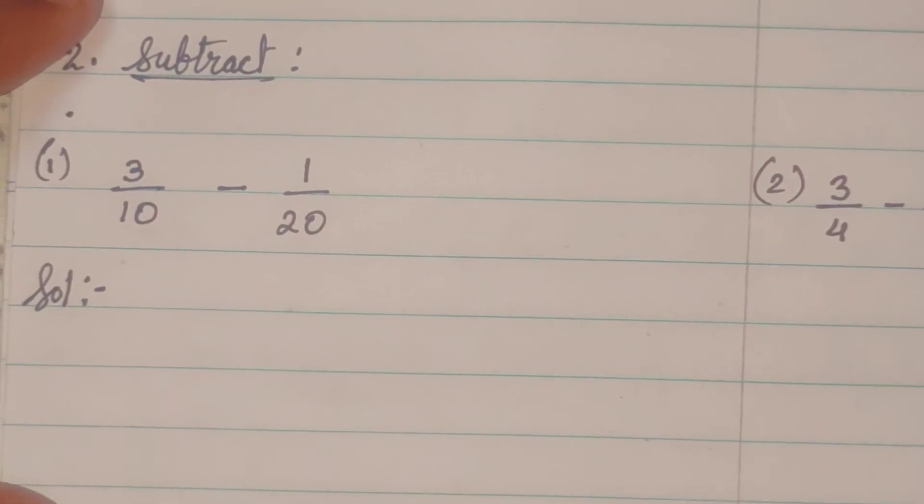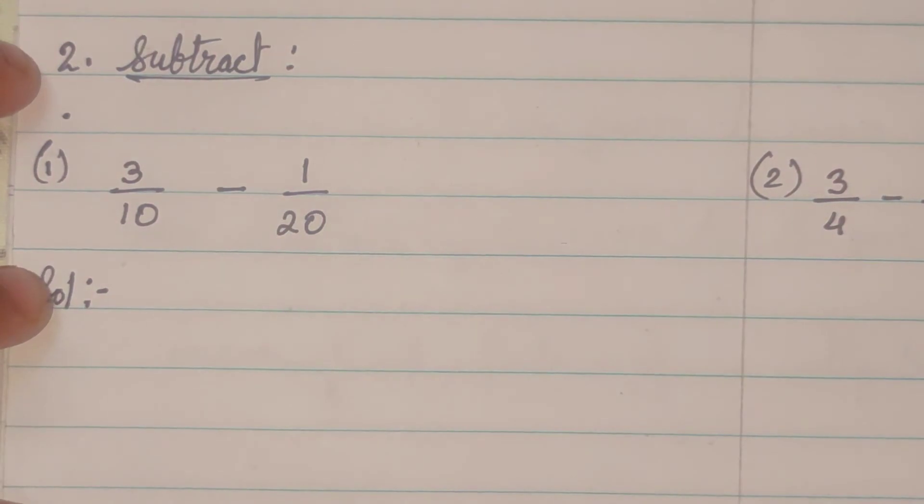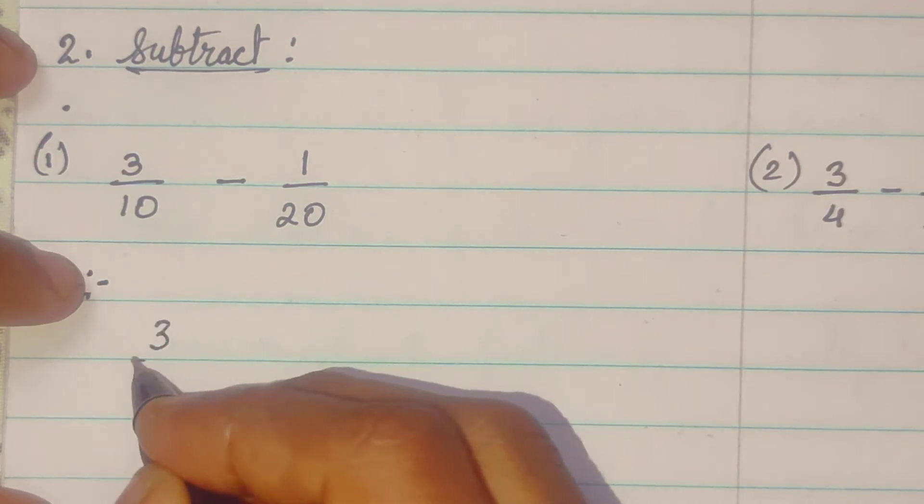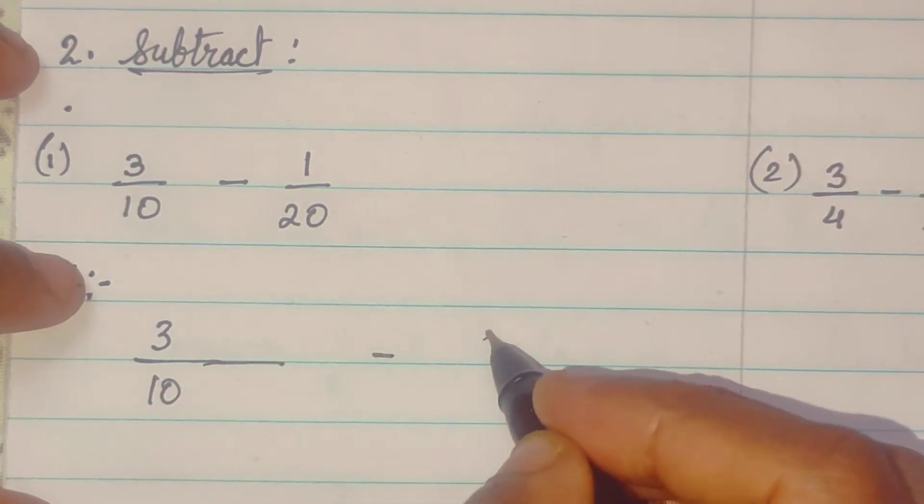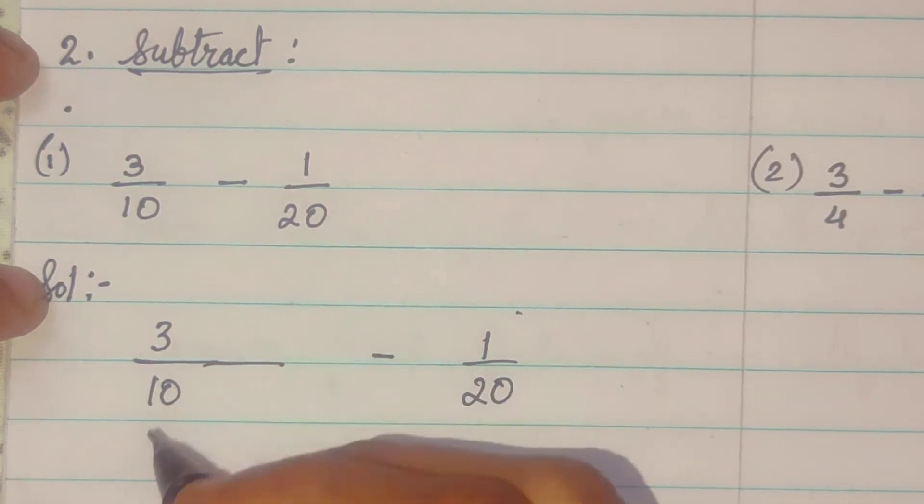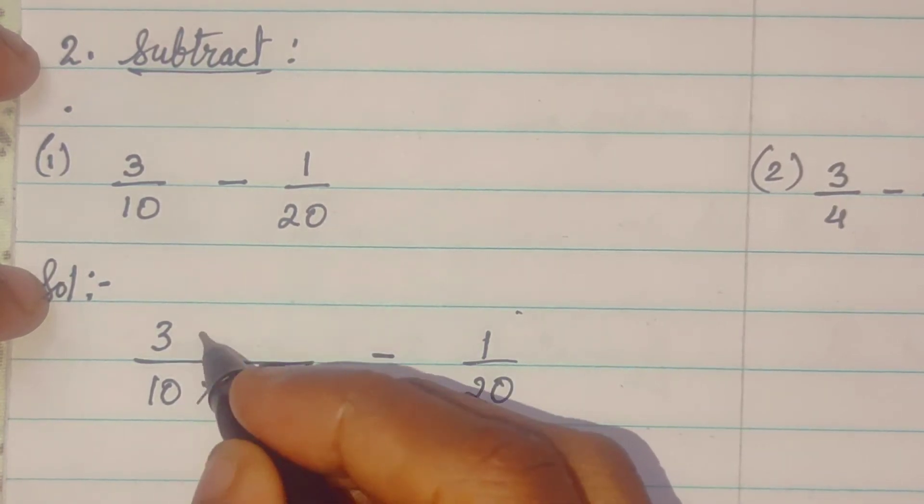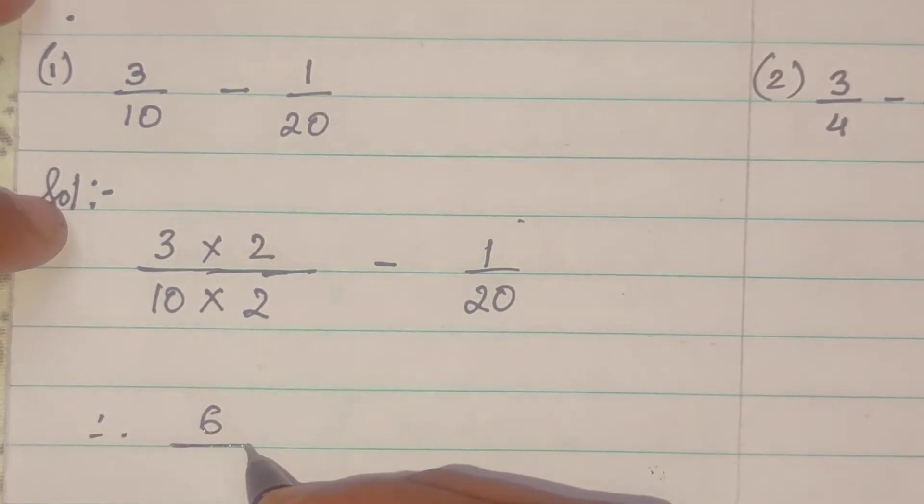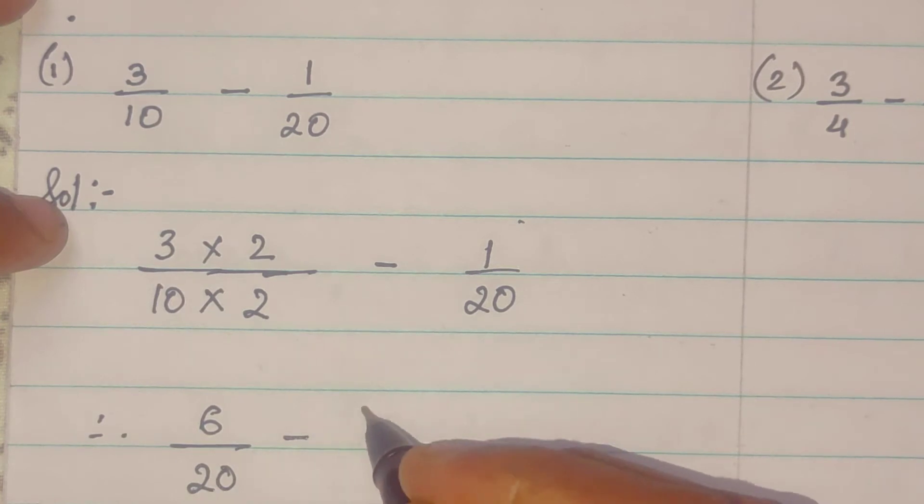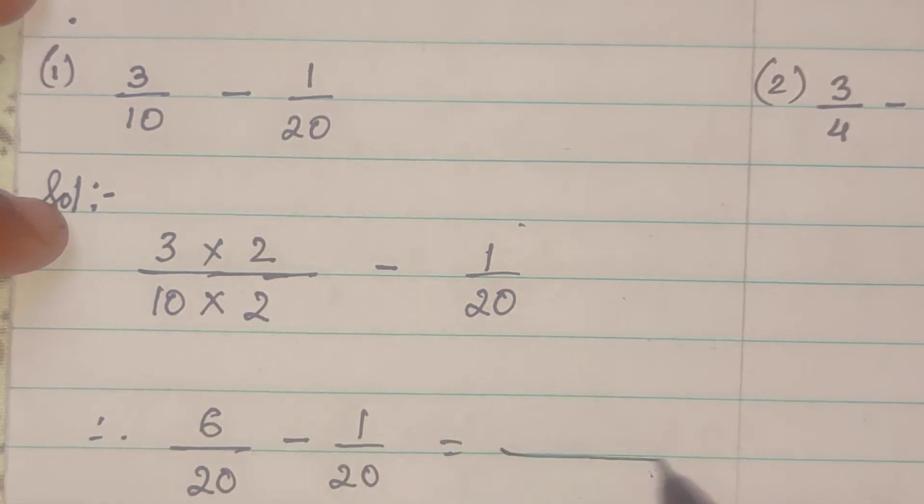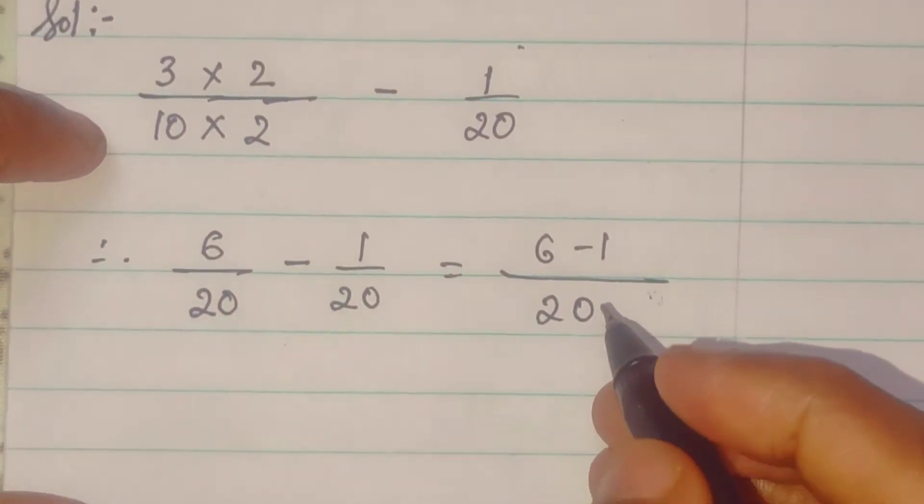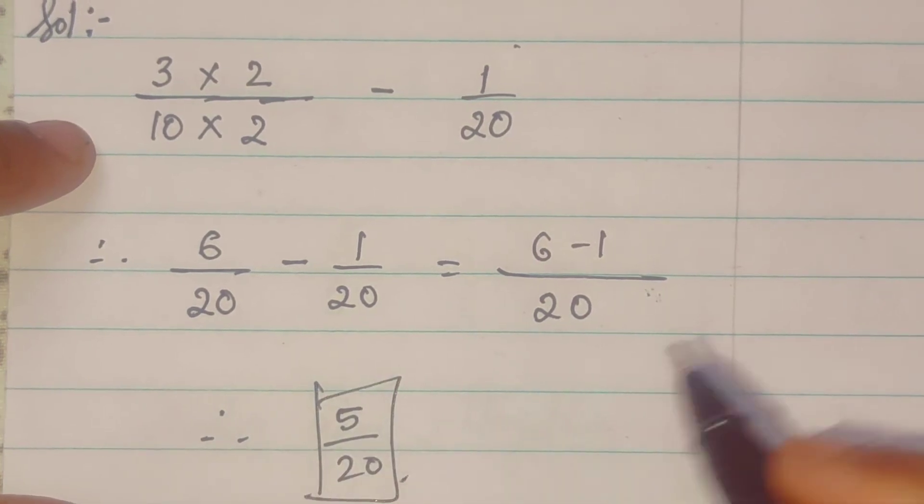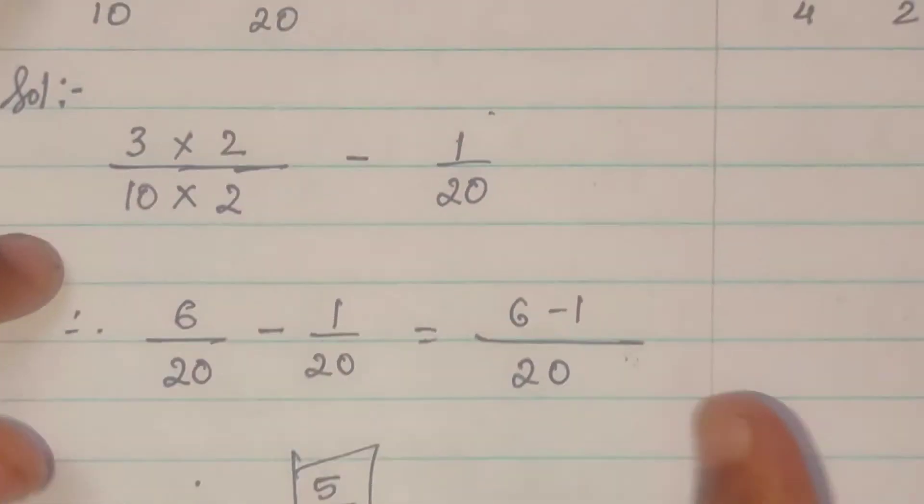Similarly, next sum says, sub-fraction. So, yeh se aam nahi addition kiya tha, weise sub-fraction bhi karenge. Yehaan pae first we will see denominator same hai kiya ni. So, therefore, 3 2 is a 6 upon 20 minus 1 upon 20. So, 6 minus 1 upon 20. So, that will be equal to 5 upon 20. So, this is the final answer.